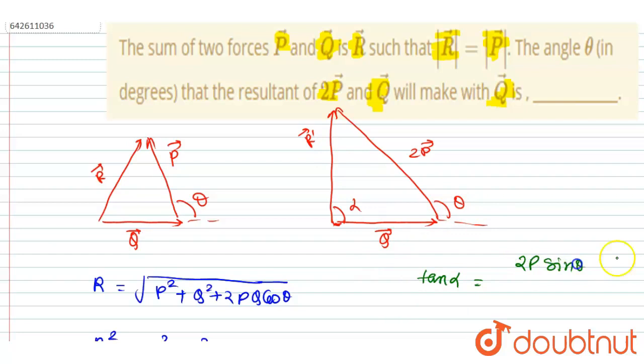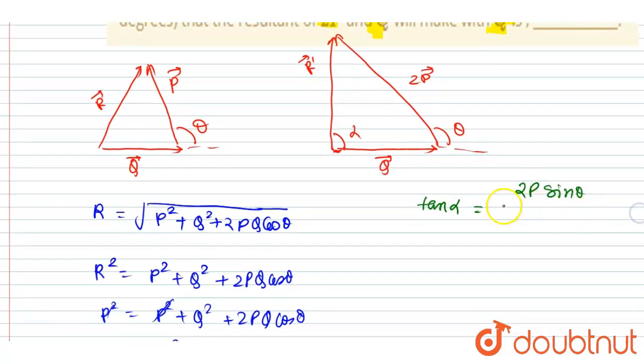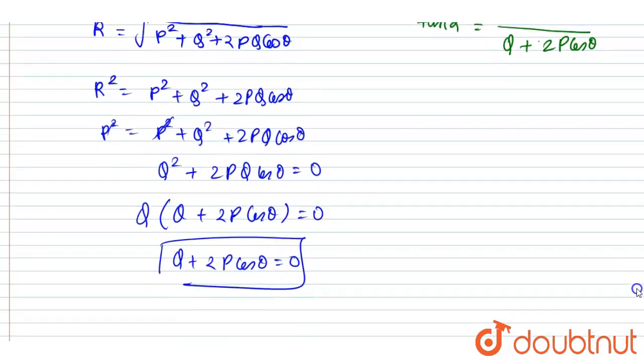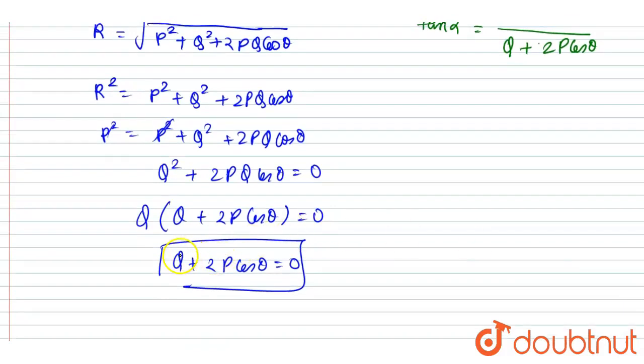2P sin theta, where theta is the angle between the two, in division Q plus 2P cos theta. This was the formula between the resultant and Q vector. Right, and if you see, we already derived the value of Q plus 2P cos theta is equal to zero.